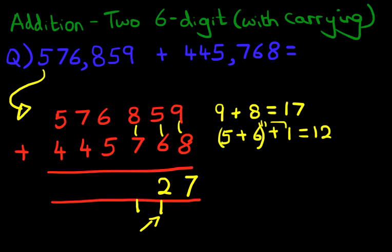Now let's add the hundreds column. We have 8 plus 7 plus the 1. The 1 is over here. So how do we do this? Well, 8 plus 7 is 15. Add the 1 is 16. So let's write that down. Got 1 over here and 6 over here. That's the 16.